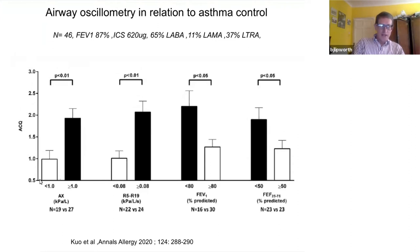Here we have the ACQ and the AX using a cutoff of less than one and greater than one. You can see that the difference in ACQ exceeded the minimum important difference of 0.5 — in fact it's nearly a one-unit difference, which is big.